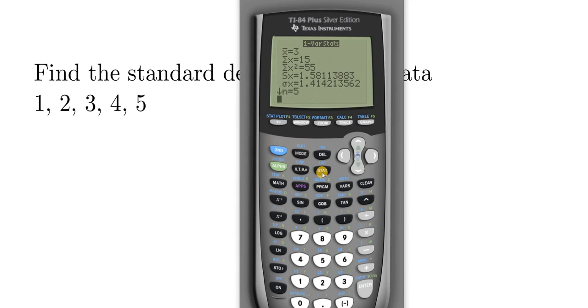Let me do it again from scratch. So you hit STAT, you go to EDIT, you type in the data, then you hit STAT again, and then you go over to CALC. So you have to hit the right arrow key, then you hit ENTER, ENTER, ENTER, and then there it gives you the standard deviation.